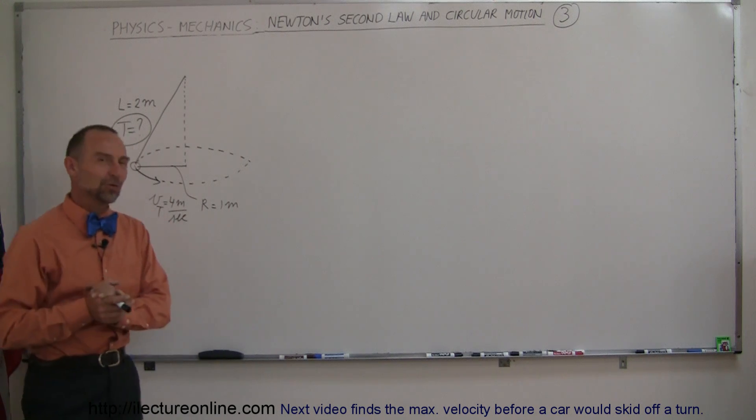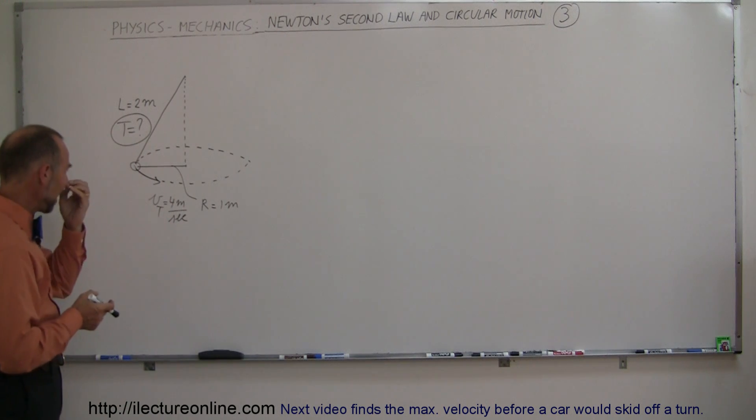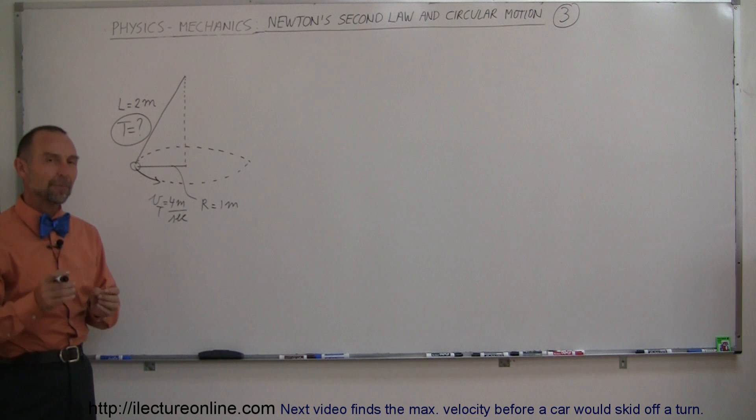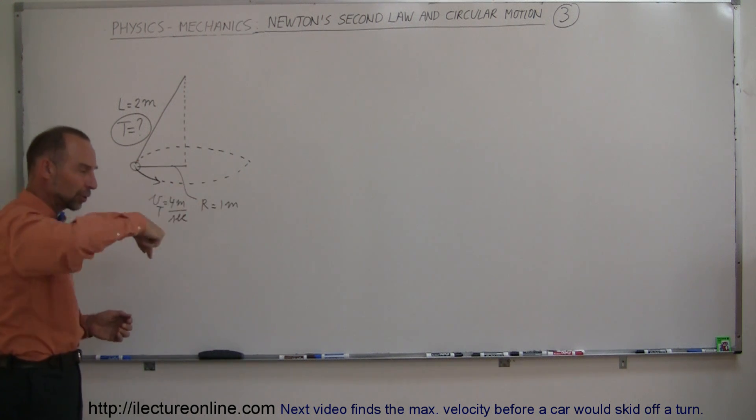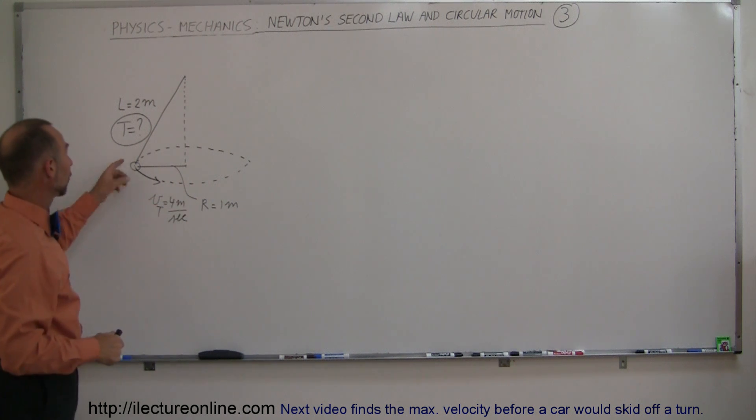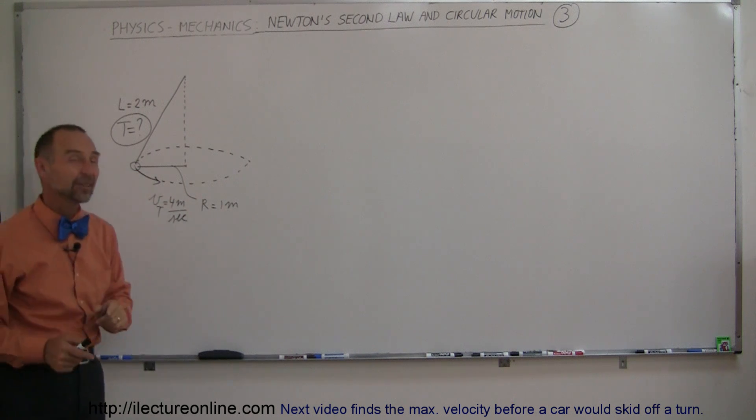In our third example of circular motion in Newton's second law, we have an interesting contraption. We have a pendulum, but instead of swinging back and forward, it revolves in circles. The length of the pendulum is 2 meters, the radius of the circular motion is 1 meter, and the tangential velocity is 4 meters per second.